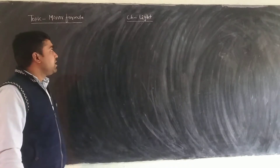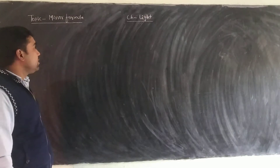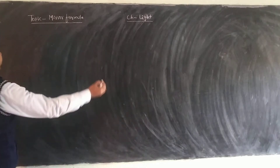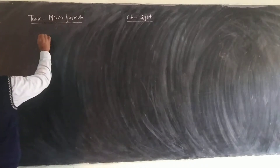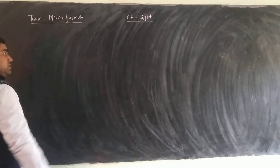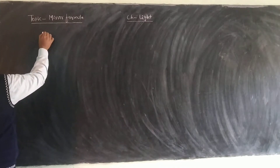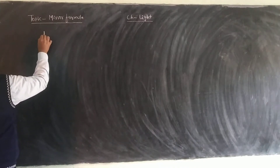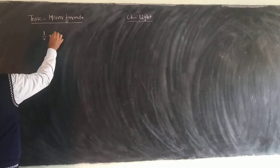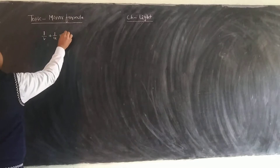I am going to talk about mirror formula. Mirror formula is for concave and convex mirror — two cases. The formula is: one by v plus one by u is equal to one by f.